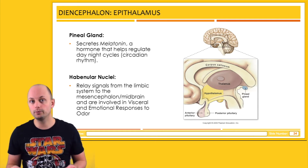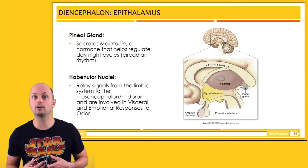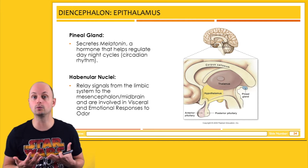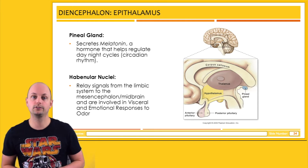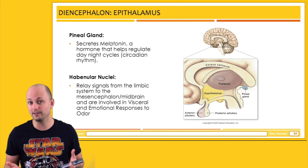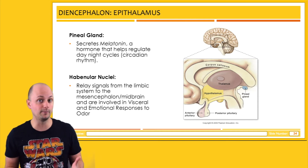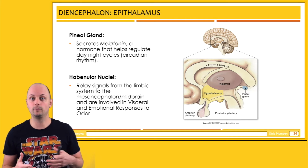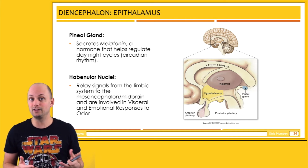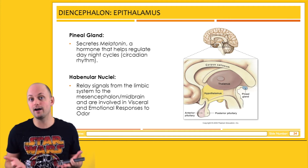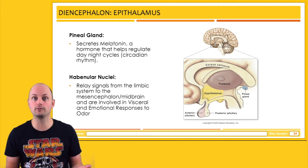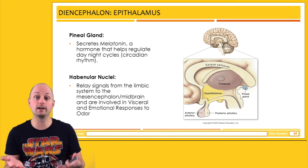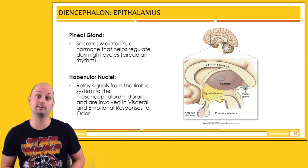This region also plays a role in our emotional responses to odor. For example, some people vomit at the smell of vomit, or some people might feel happy or sad when they smell apple pie because it reminds them of their grandmother. That's what is meant by emotional responses to odor.